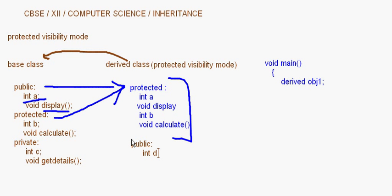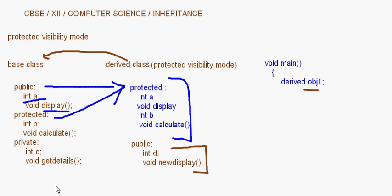If the derived class has its own public section — for example, int d and void new_display — only those will be accessible to the object obj1. So in a way, using the protected visibility mode makes the base class data members and member functions protected in the derived class. That is how a protected visibility mode works.